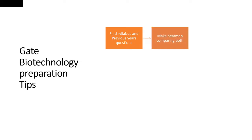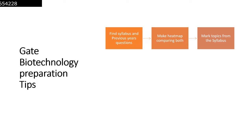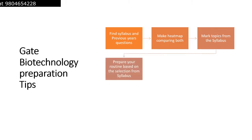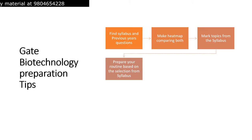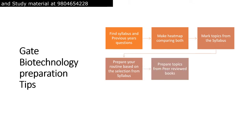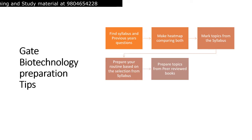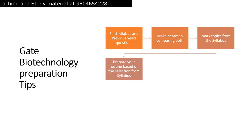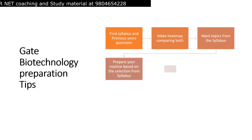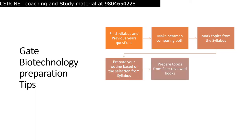Once you have the heat map, mark the topics that are very, very important from the syllabus. Then distribute your study routine based on topics you've already learned and topics you haven't learned before. After that, set a timeframe — whether six months, eight months, or a year — depending on your own schedule.